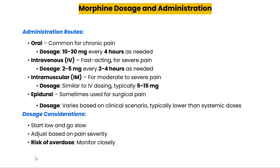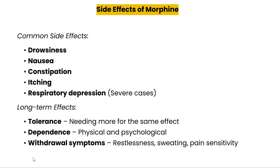Like all other medications, morphine comes with its own set of side effects. Common ones include drowsiness, constipation, nausea, and in some cases respiratory depression, which can be life-threatening if the dose is too high. Long-term use may also lead to tolerance and dependence, meaning higher doses are required for the same effect. Stopping morphine suddenly can cause withdrawal symptoms. Many of you may be wondering how morphine compares to other painkillers like fentanyl, oxycodone, or even over-the-counter options.